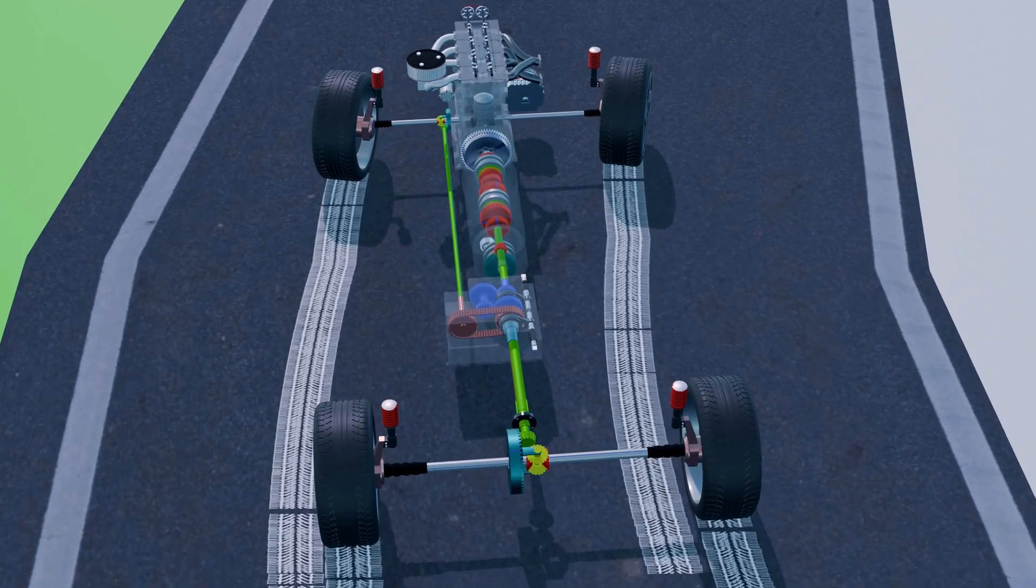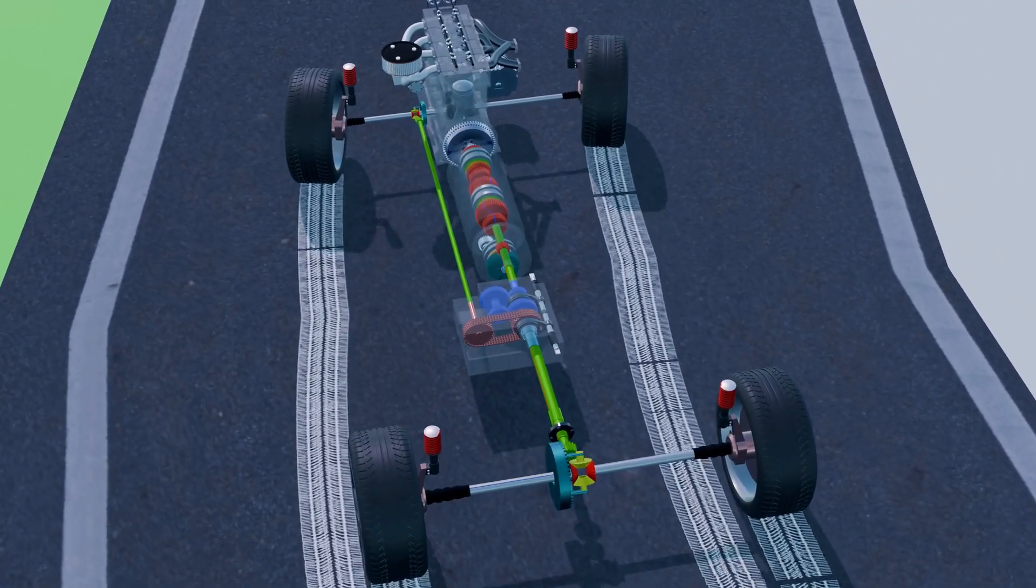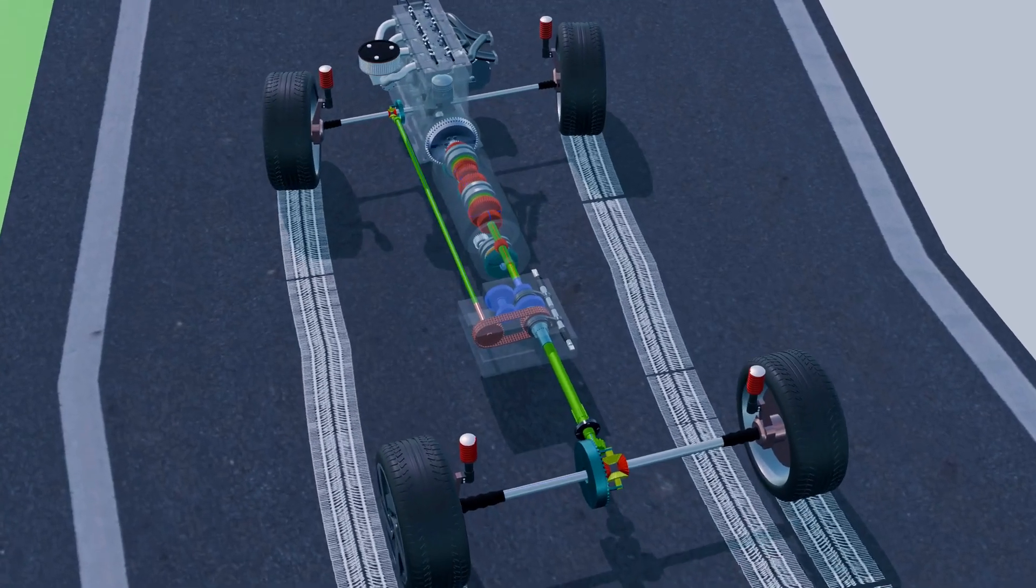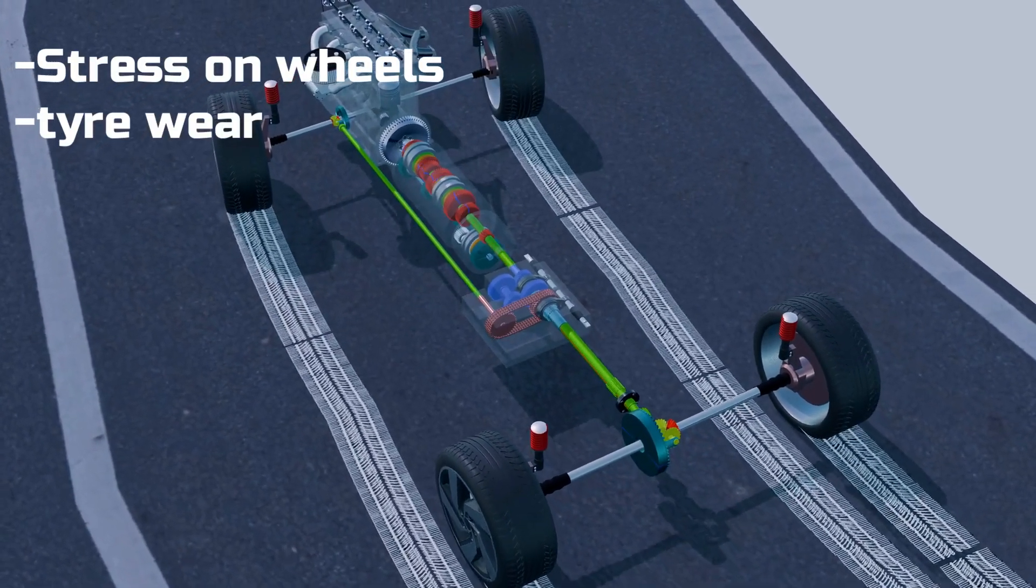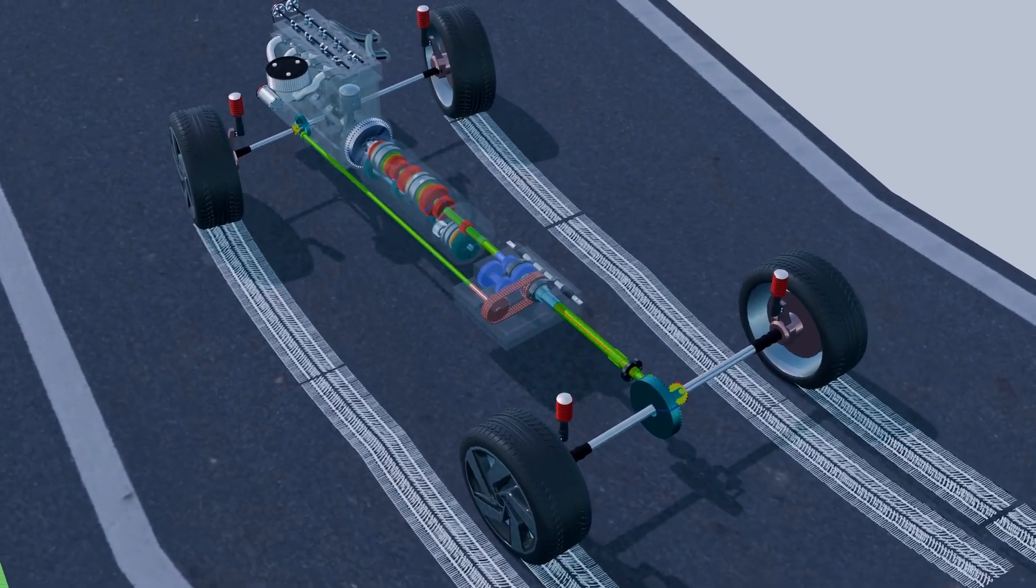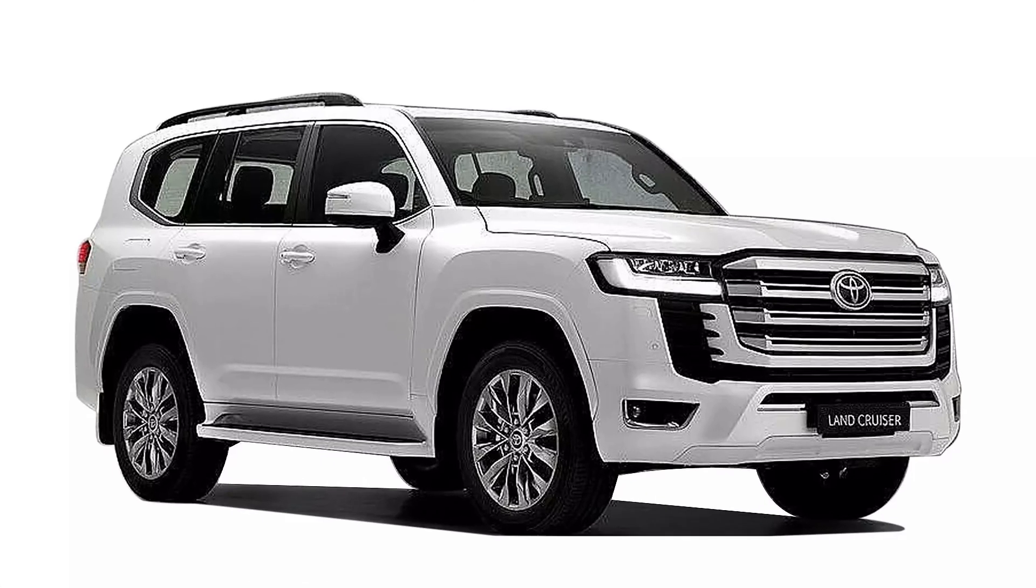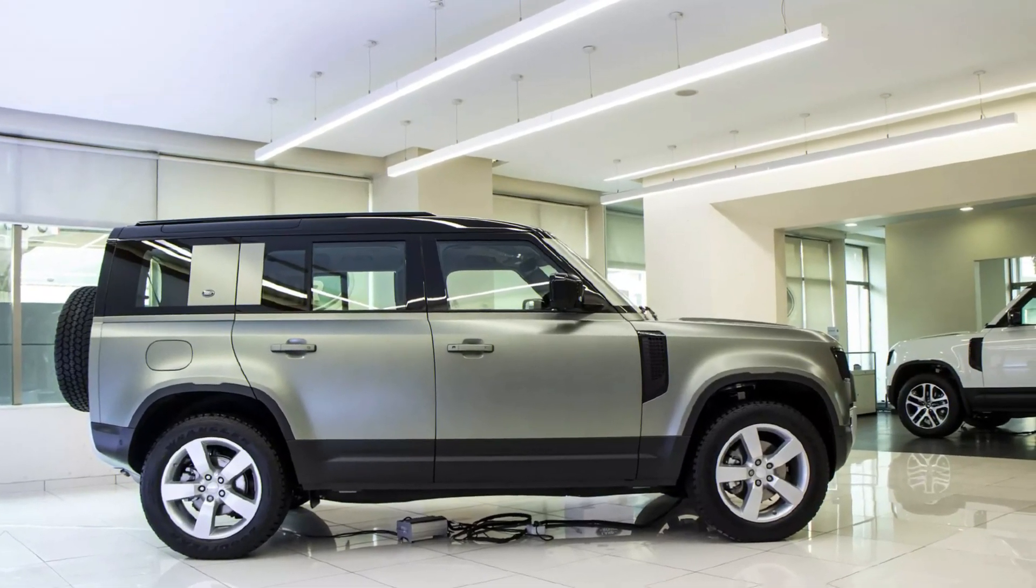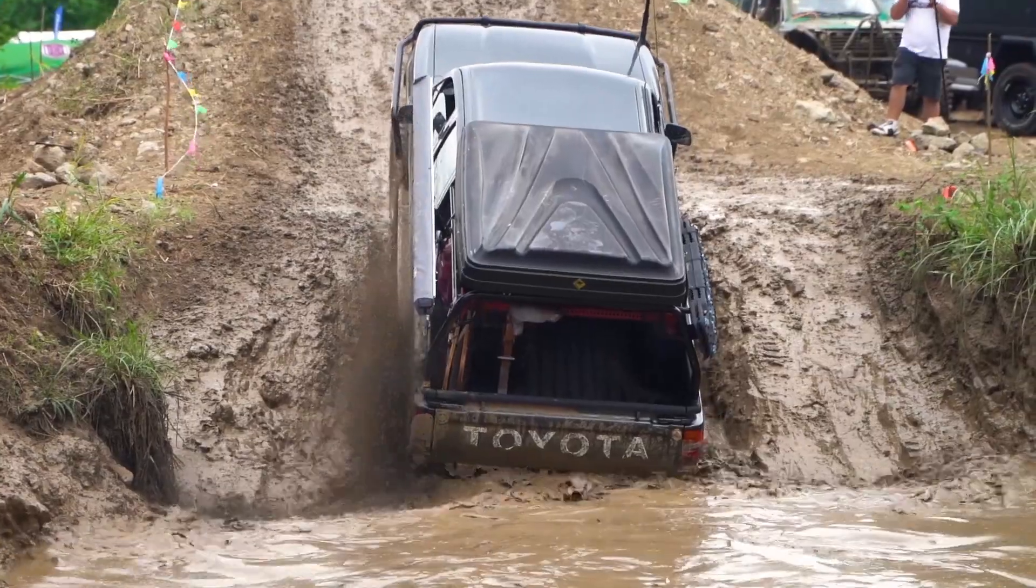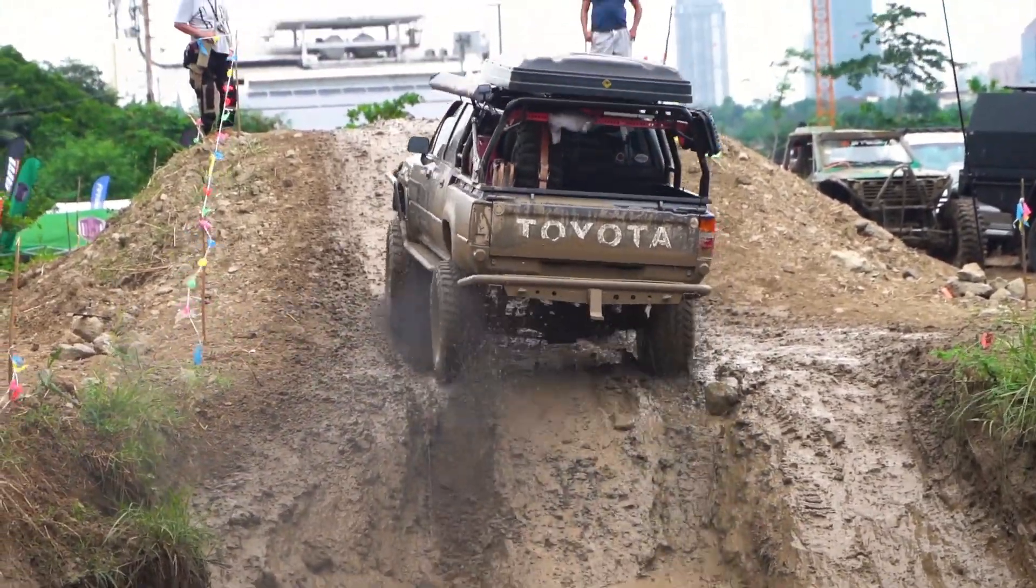That's why using 4x4 mode on dry, paved roads can be problematic. All four wheels are forced to rotate at the same speed, causing drivetrain stress, tire wear, and traction instability. Full-time 4x4 systems found in modern SUVs like the Toyota Land Cruiser or Land Rover Defender include a center differential, allowing front and rear wheels to rotate at different speeds. This makes them suitable for both on-road and off-road conditions.